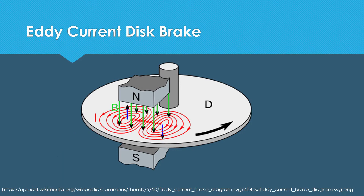On the left side of the magnetic source you can see that the eddy current is counterclockwise. However, on the right side it is clockwise. Lenz's law can explain the reason.